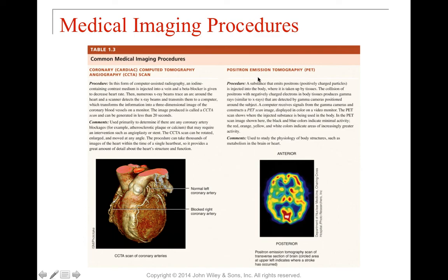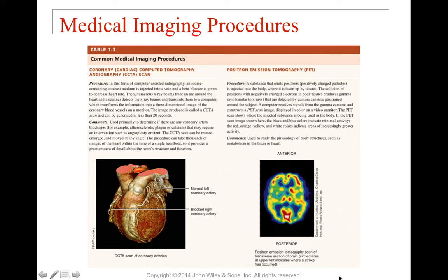A PET scan — positron emission tomography — involves injecting positrons that the body incorporates into tissues. A high-tech camera surrounding the area receives signals from the positrons and constructs an image showing where the substance is being used in the body. It's used for physiological purposes such as measuring metabolism — for example, a region of the brain not using the injected substance indicates where a stroke has occurred and the brain isn't functioning normally. Regions shown in red indicate active uptake and use of the positrons.